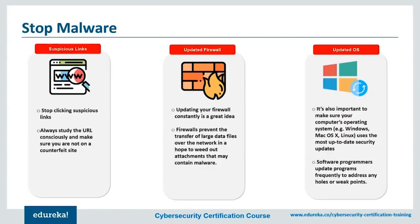Each form of malware has its own way of infecting and damaging computers, and so each one requires a different removal method. The best way to prevent malware is to avoid clicking on links or downloading attachments from unknown senders. This is sometimes done by deploying a robust and updated firewall, which prevents the transfer of large data files over the network to weed out attachments that may contain malware. It's also important to keep your operating system — whether Windows, Mac OS, or Linux — using the most up-to-date security updates, as programmers update programs frequently to address holes or weak points.